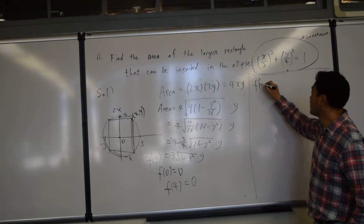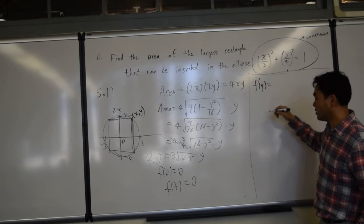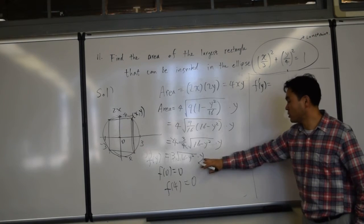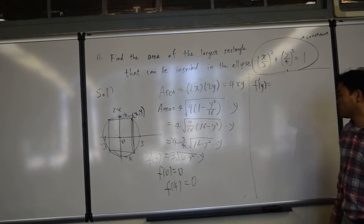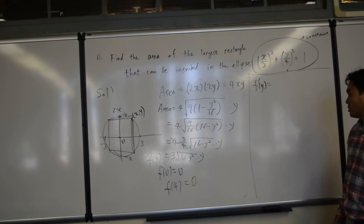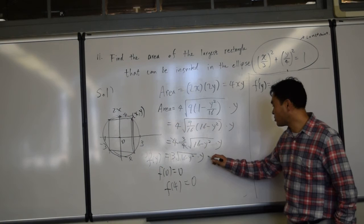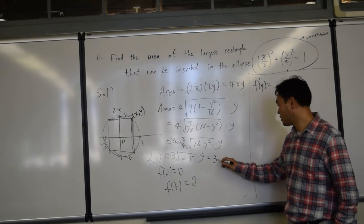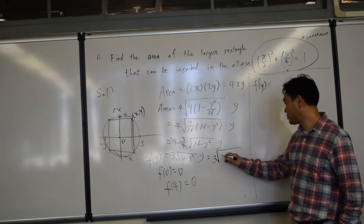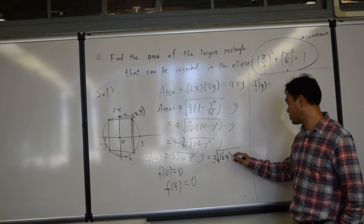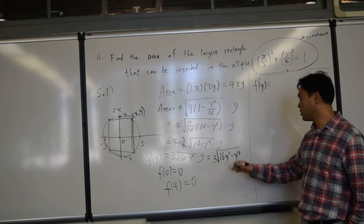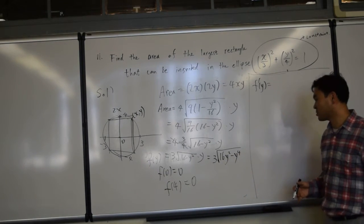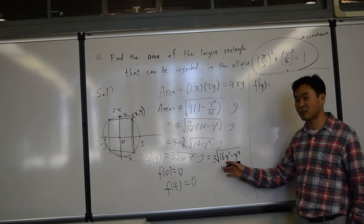Alright, so let's do that. f prime of y is according to... We have to use the product rule. You know what? Let's just do this. Let's just say this is square root of 16y squared minus y to the fourth. So we can just use the chain rule. That'll be another nice way to differentiate.